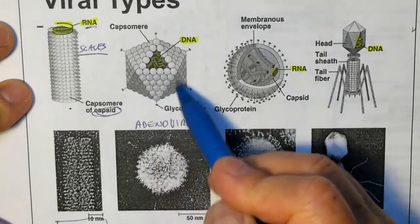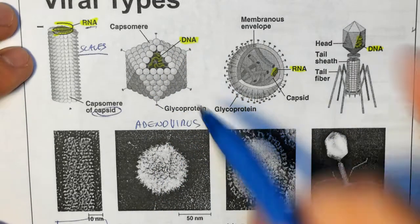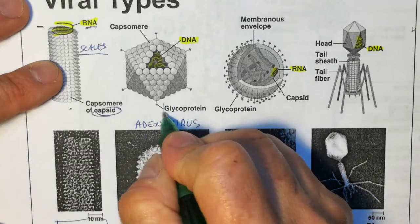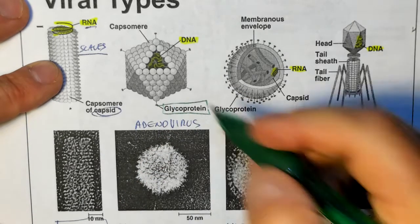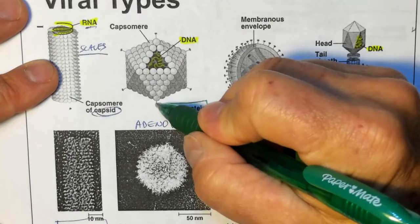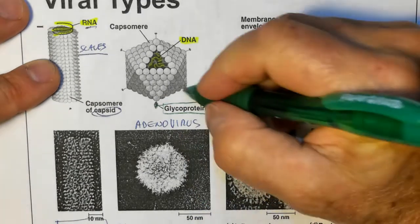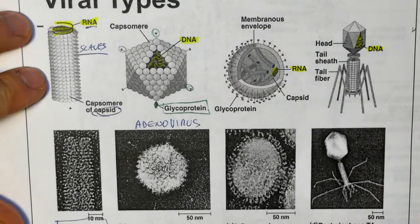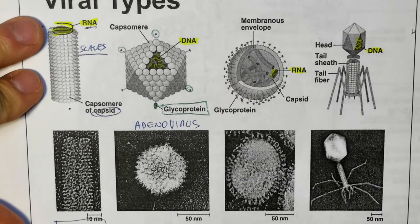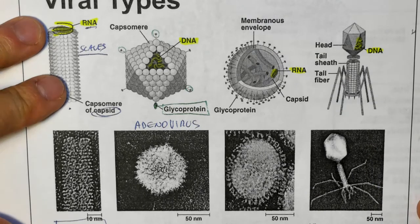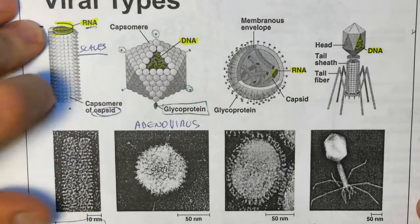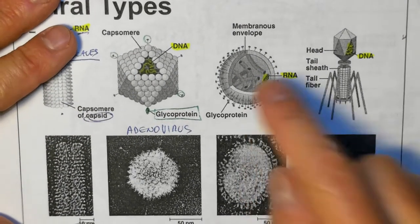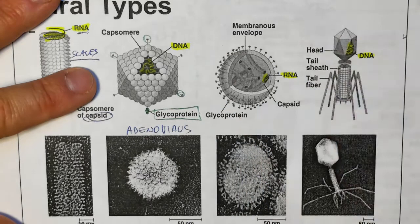Adenoviruses have the proteins around forming the capsid. But some of these proteins are actually glycoproteins — you have the protein and you have a sugar attached to them. Not always is the protein just one type. Many types of viruses, like the coronavirus, will have several different types of proteins on the outside. Then right here you have one of the viruses that has this membranous envelope — and this is one of the flu viruses, the common flu.